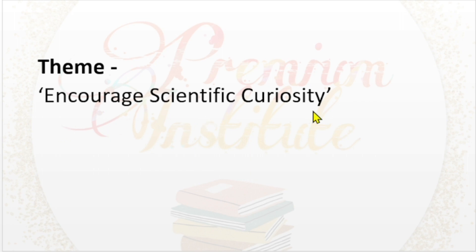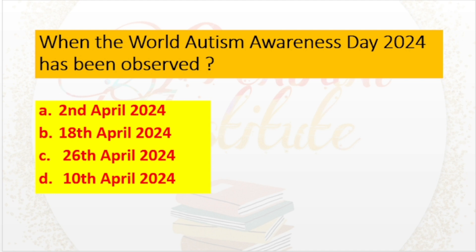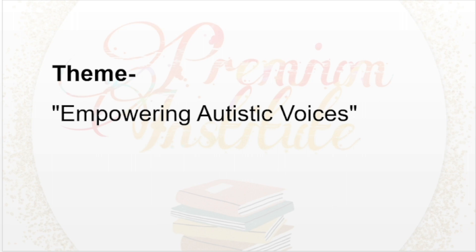When has the World Autism Awareness Day 2024 been observed? a. 2nd April 2024, b. 18th April 2024, c. 26th April 2024, d. 10th April 2024. Answer: 2nd April 2024. Theme: Empowering Autism Awareness.